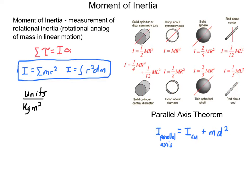Another very useful thing is the parallel axis theorem. It says: if you know the moment of inertia of any object through the center of mass, and you want to know the moment of inertia for that same object rotated around a different yet parallel axis — maybe the end of the rod instead of through the center of mass — you can simply use the equation: I equals I_cm plus M times d squared, where d is the distance between the center of mass axis and the new parallel axis.